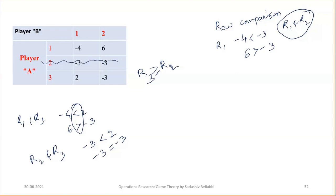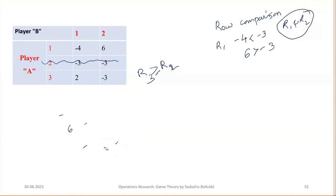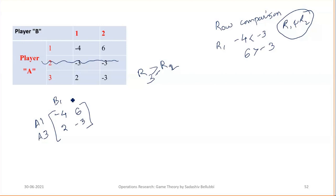The 2 by 2 reduced matrix has values minus 4, 6, 2, and minus 3, with strategies A1, A3 for player A and B1, B2 for player B. Now find probabilities P1 and P3 for player A, and Q1 and Q2 for player B using the analytical or algebraic method.